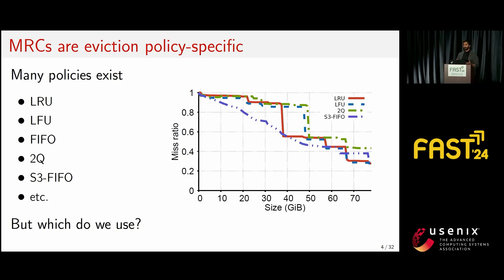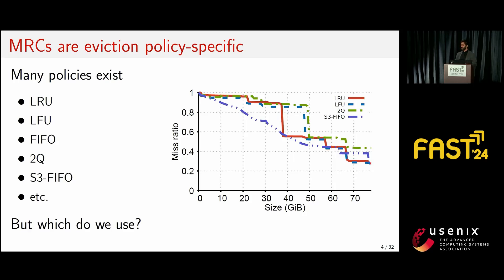The question is, which one do we use? We have rules of thumb as to which policy is good for which workload, but for real-time operations where very little is known about the access trace, it's difficult to pick an eviction policy. On the right, we can see MRCs generated for LRU, LFU, 2Q, and S3-FIFO. For this workload, S3-FIFO outperforms the others for the majority of cache sizes, but for cache sizes larger than roughly 66–67 gigabytes, S3-FIFO is actually superseded by LRU and LFU.